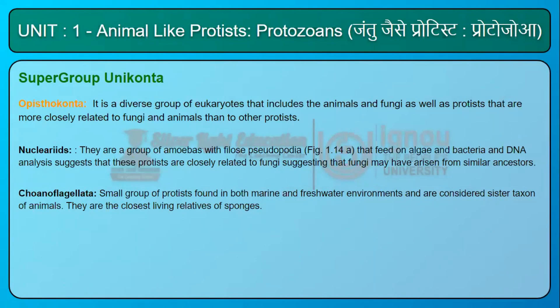Opisthokonta is a diverse group of eukaryotes that includes animals and fungi as well as protists more closely related to fungi and animals than to other protists. Nucleariids are a group of amoebas with filose pseudopodia that feed on algae and bacteria; DNA analysis suggests these protists are closely related to fungi, implying fungi may have arisen from similar ancestors. Choanoflagellata is a small group of protists found in both marine and freshwater environments, considered the sister taxon of animals and the closest living relatives of sponges.